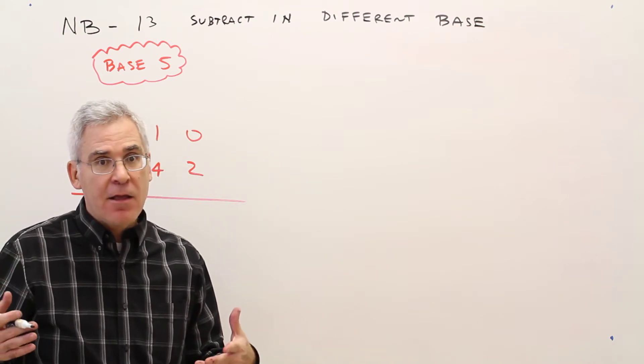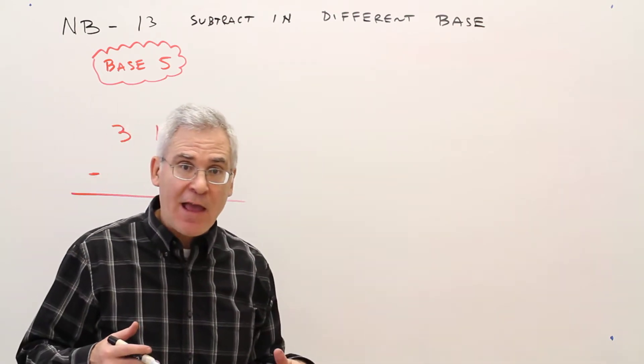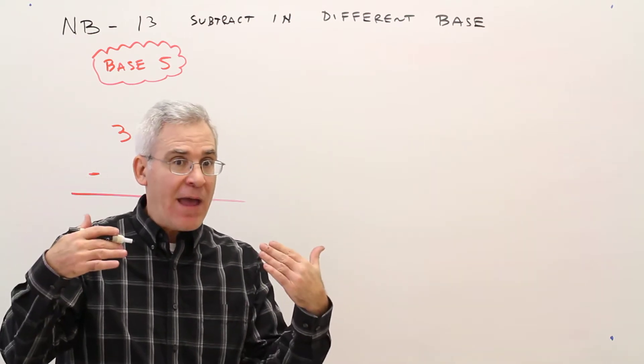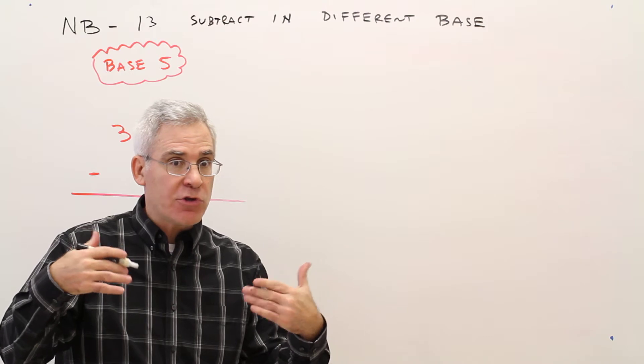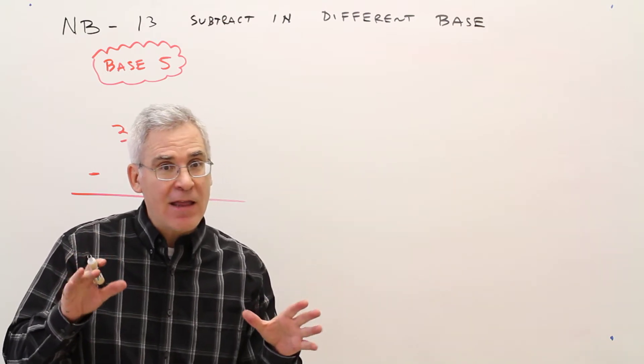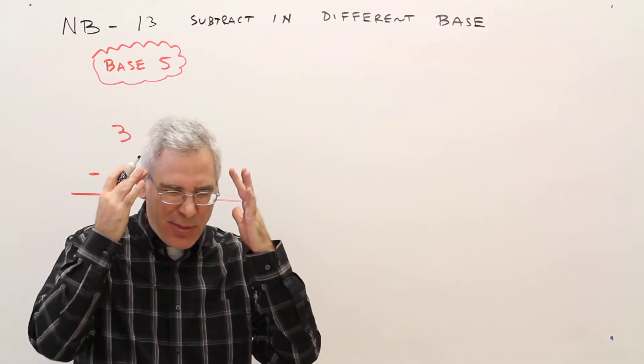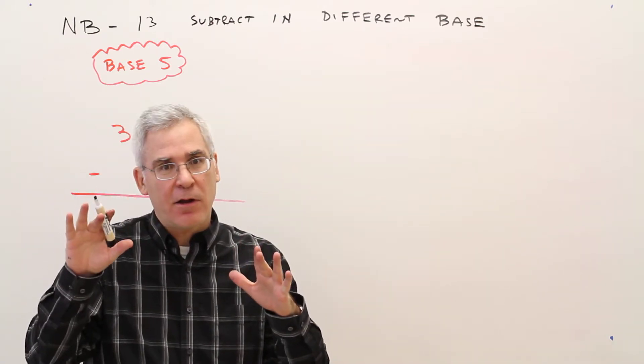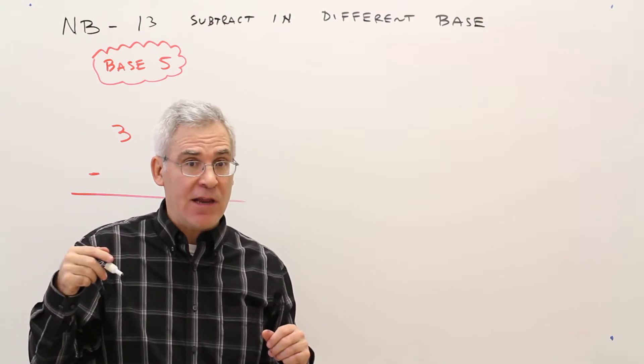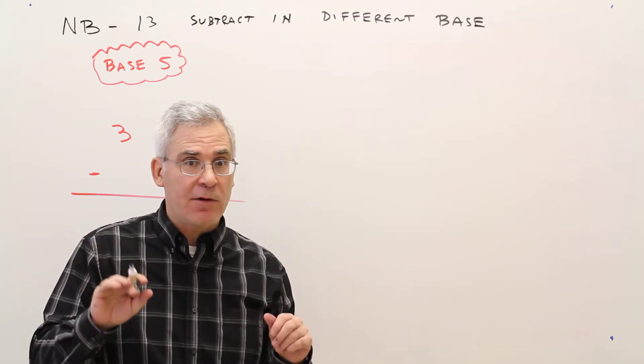Again, if you want, you can convert everything to base 10, subtract in base 10, and then convert back to base 5. But I'm going to show you the quicker method, staying in base 5. And again, in my head, I'll be thinking initially of base 10 and then converting it. The one thing with subtracting is you've got to remember sometimes you need to borrow. And that's where it gets confusing.